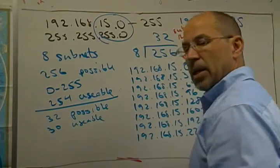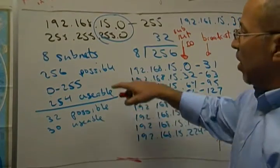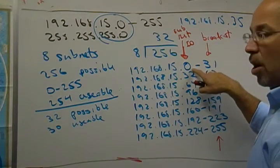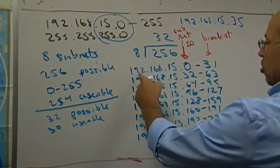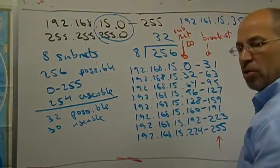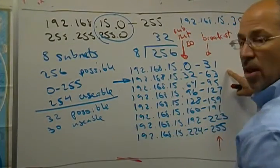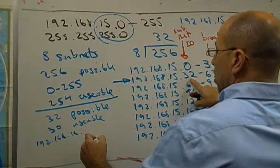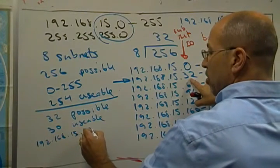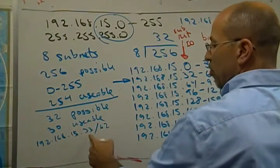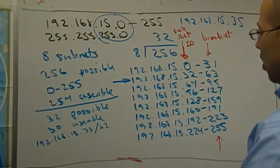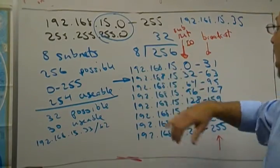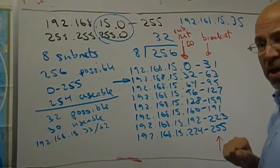We had a router for the original network at 15.1 or 15.254 — we need routers in these subnets too. A router can be low or high in the range. Taking the second subnet as an example: 192.168.15.32 is the network, so the gateway might be 192.168.15.33 or 192.168.15.62. That works out — I broke the network into 8 subnets using simple division and address range tricks.